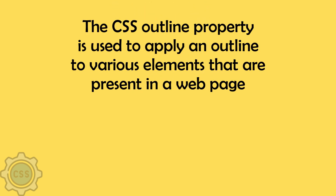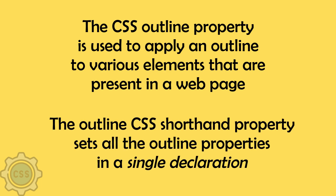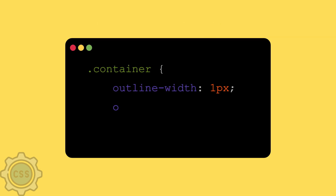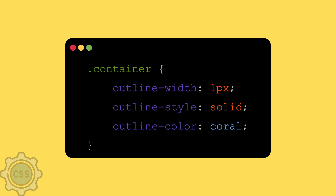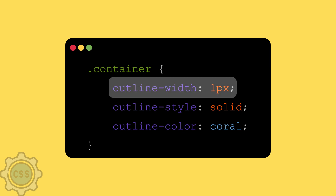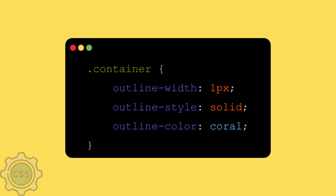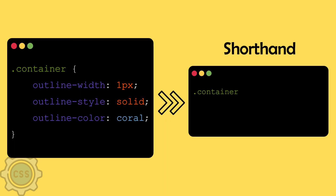The CSS outline property is used to apply an outline to various elements present on a web page. The outline CSS shorthand property sets all the outline properties in a single declaration. Here is an example — you can see that I have written certain outline properties separately: width, style, and color. Now this is how it can be written as shorthand: width 1px, space, solid, space, then the color.